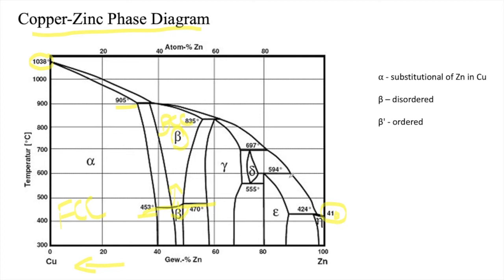The other phases are gamma and epsilon. You will see a peritectic reaction that is liquid and liquid plus alpha. At this point 905 degrees Celsius, the liquid plus alpha turns into beta.